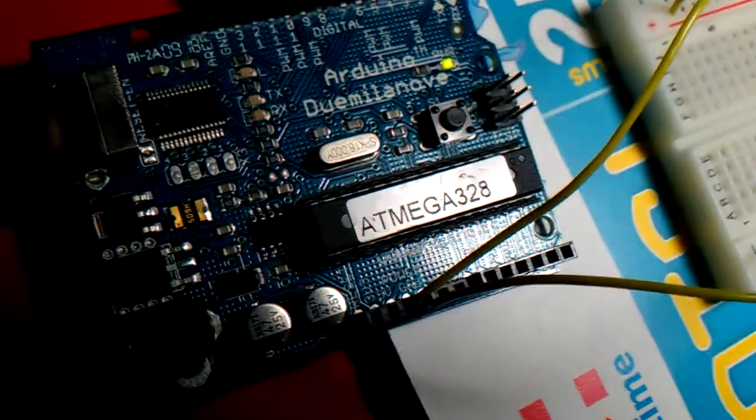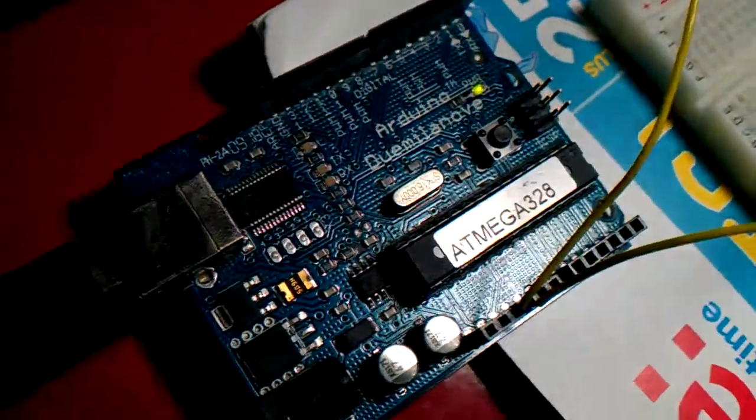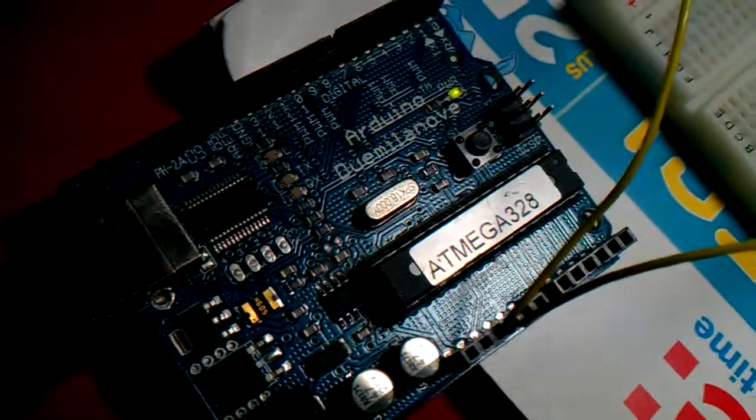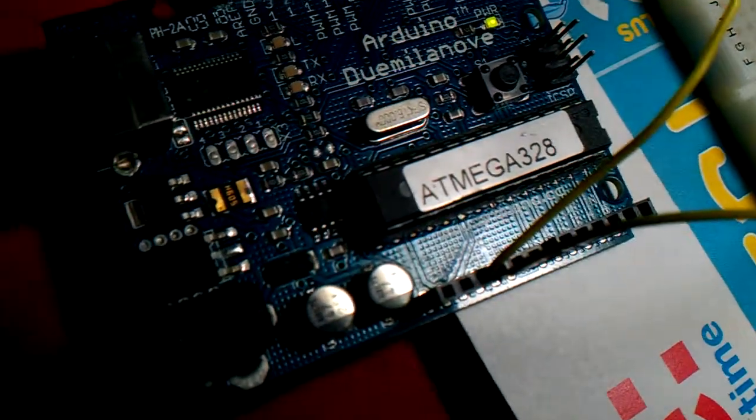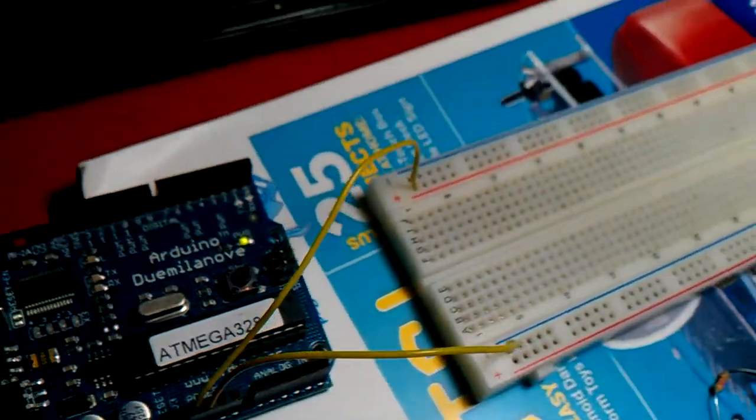From there, I have a couple of jumper wires that are running from the 5 volt and ground pins of the Arduino. If I can get that in focus. Two pins down here labeled 5 volt and ground. And I have those wires running over to my breadboard.